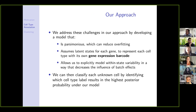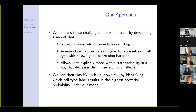We aim to address these challenges by developing a reference-based approach using a model with three key characteristics. First, our model is parsimonious, which helps reduce overfitting. Second, we assume latent states for each gene, allowing us to represent every cell type with a gene expression barcode. Finally, we explicitly model within-state variability in a way that decreases the influence of batch effects. We then classify every unknown cell by identifying the cell type label with the highest posterior probability, providing probabilistic classifications reporting the probability of every cell belonging to every cell type.